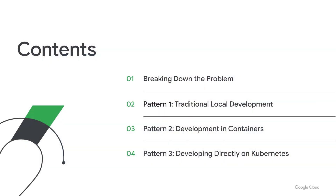Today we're going to be talking about application development and Kubernetes. First we're going to break down the problem, and then we're going to go over three patterns that I commonly see companies adopting as they adopt Kubernetes within their organizations, and how those patterns affect their application developers.